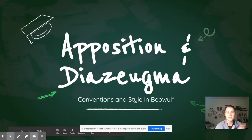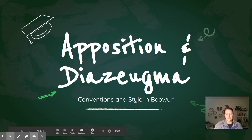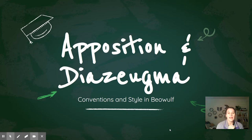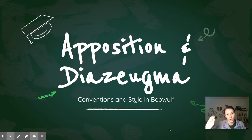For today's Nearpod I'm trying something a little bit different — I'm going to try to combine my video recordings with the Nearpod activities. Today we are looking at some more elements of syntax, which is part of English conventions and style, and Beowulf. The two things we're going to be looking at are on the title screen: the first one is apposition, and the second one — get ready to feel smart once you know what this is — diazeugma.